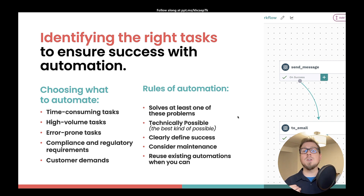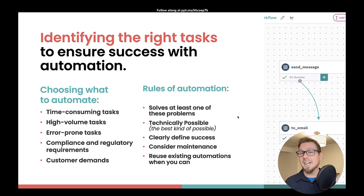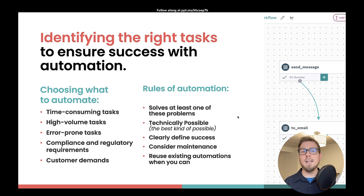Next, you need to consider the rules of automation. First of all, it needs to solve at least one of these problems. Next, it needs to be technically possible — which we like to say is the best kind of possible. Do you have the tools needed to automate this? Can you integrate this into Roost? Is this something that can actually be done?